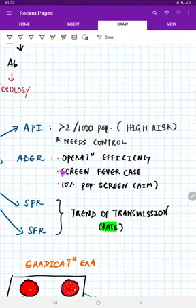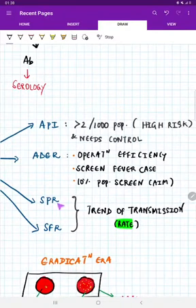What is ABER? Annual blood examination rate. It says operational efficiency. For whoever the patient coming with fever, we have to screen their blood smear for malaria. The aim is to at least screen 10 percent of the population even though the malaria incidence and prevalence is reducing, but still you need to do 10 percent of population screening. Next, SPR and SFR are basically rates, so they are going to show the trend of transmission of malaria.